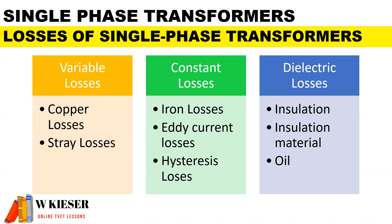In the category of variable losses, we get copper losses, which essentially are the losses found in either the primary winding or the secondary winding of the transformer, depending on whether it's a step-up or step-down transformer — found in the copper windings. Stray losses are due to the heat loss caused by the transformer, so that is efficiency loss due to heat.